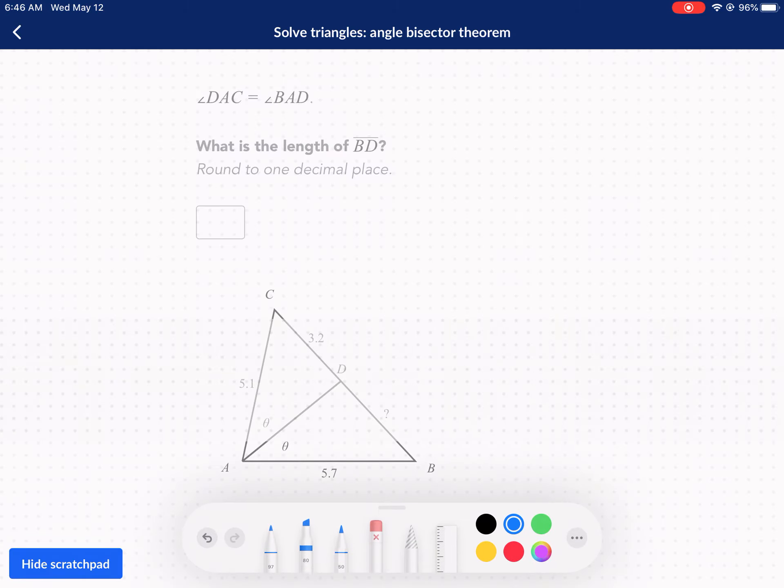Okay, so we have angle DAC, which is this angle, and we're comparing that to this angle, BAD. And it's asking, what is the length of BD right here?